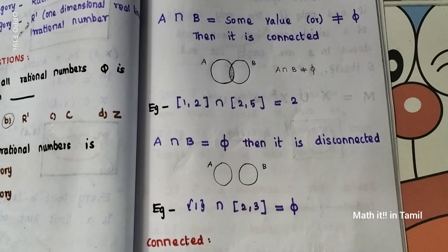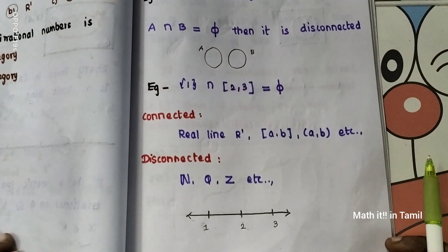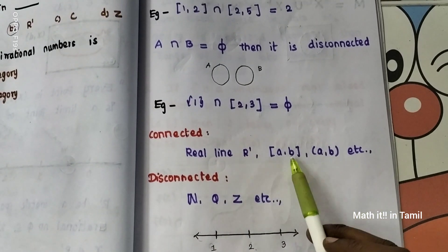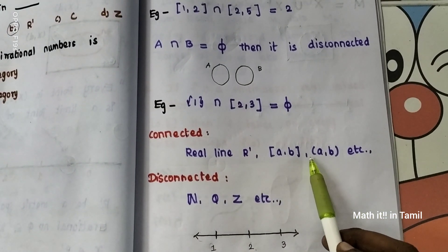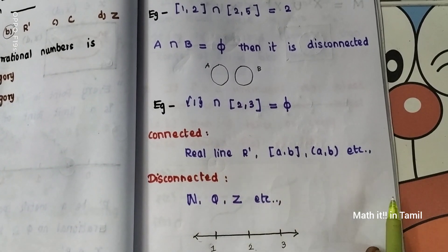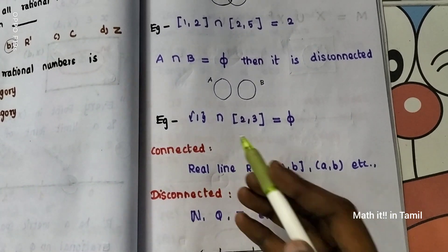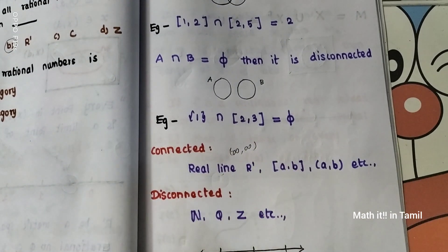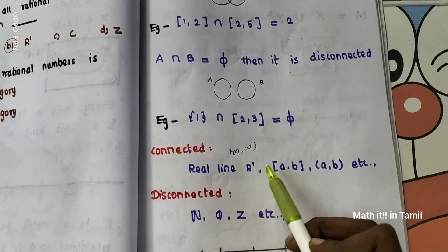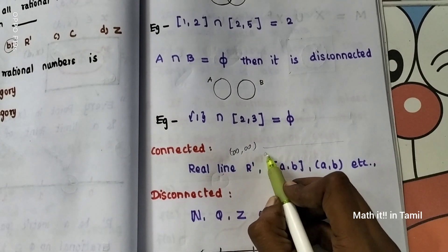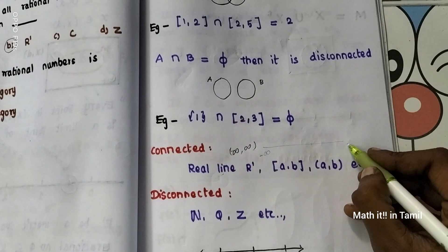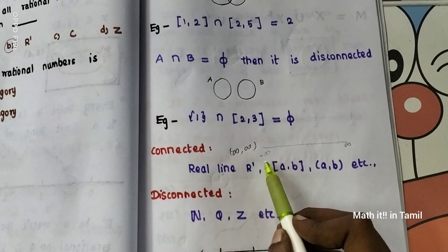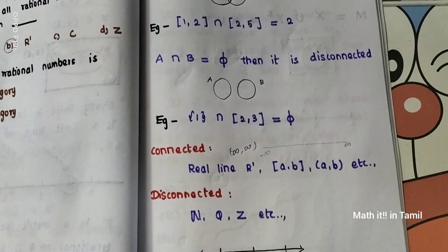This is the basic idea. Now, as an example of connected sets: we have the real line. A closed interval or open interval — any interval on the real line — is connected. The real line itself extends to infinity in both directions.